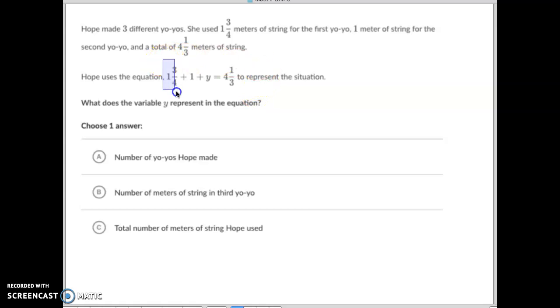She used one and three-quarters meters of string for the first one, one meter of string for the second one, and then a total of four and one-third. So what do you think the Y stands for? If this is the first yo-yo and that's the second yo-yo, Y should be the third yo-yo.